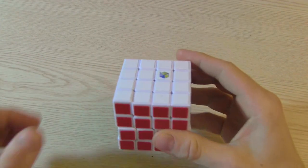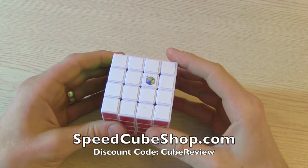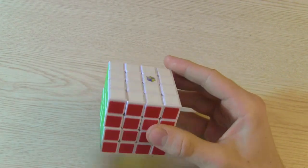Hey, Sean here from speedcubeview.com. Let's take a look at the Yushin Lion 4x4. I want to thank speedcubeshop.com for helping make this possible. Stop by the store and use discount code QBVIEW to save in your order.